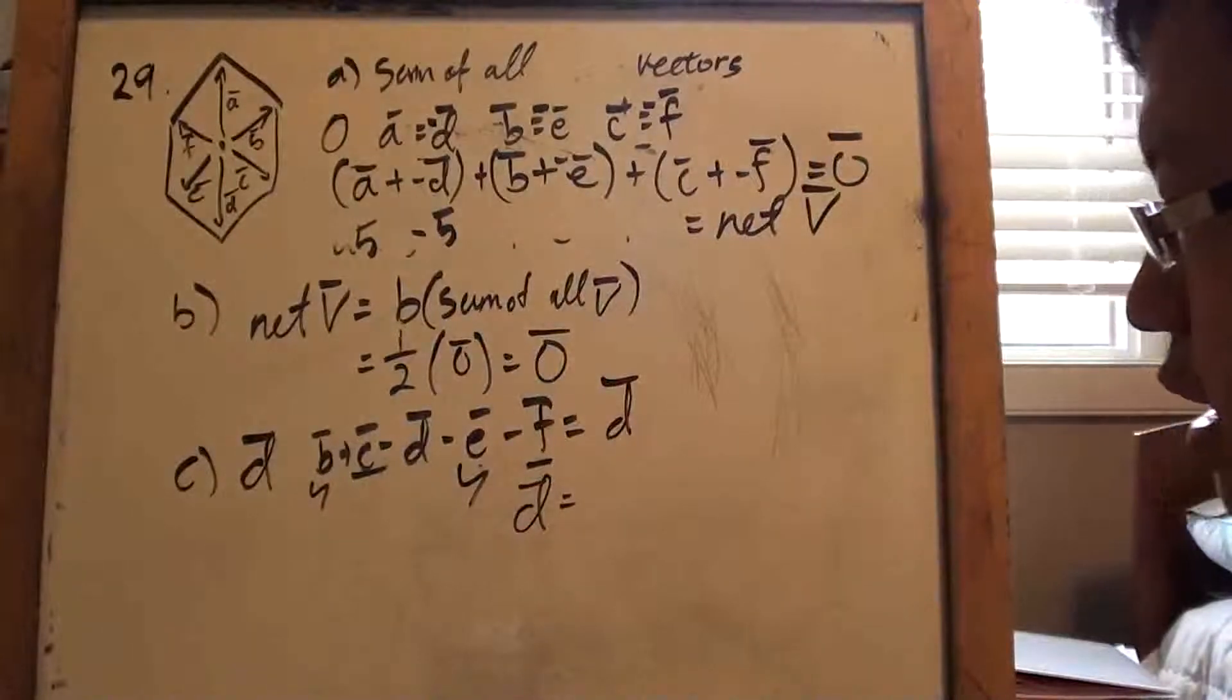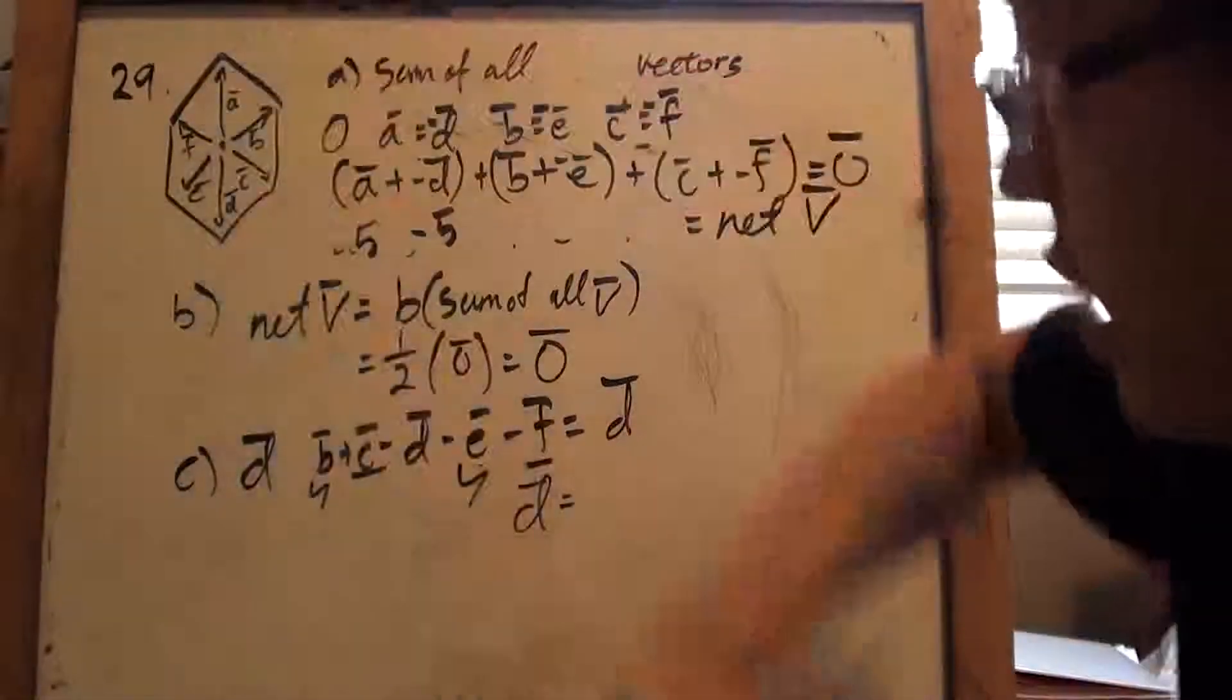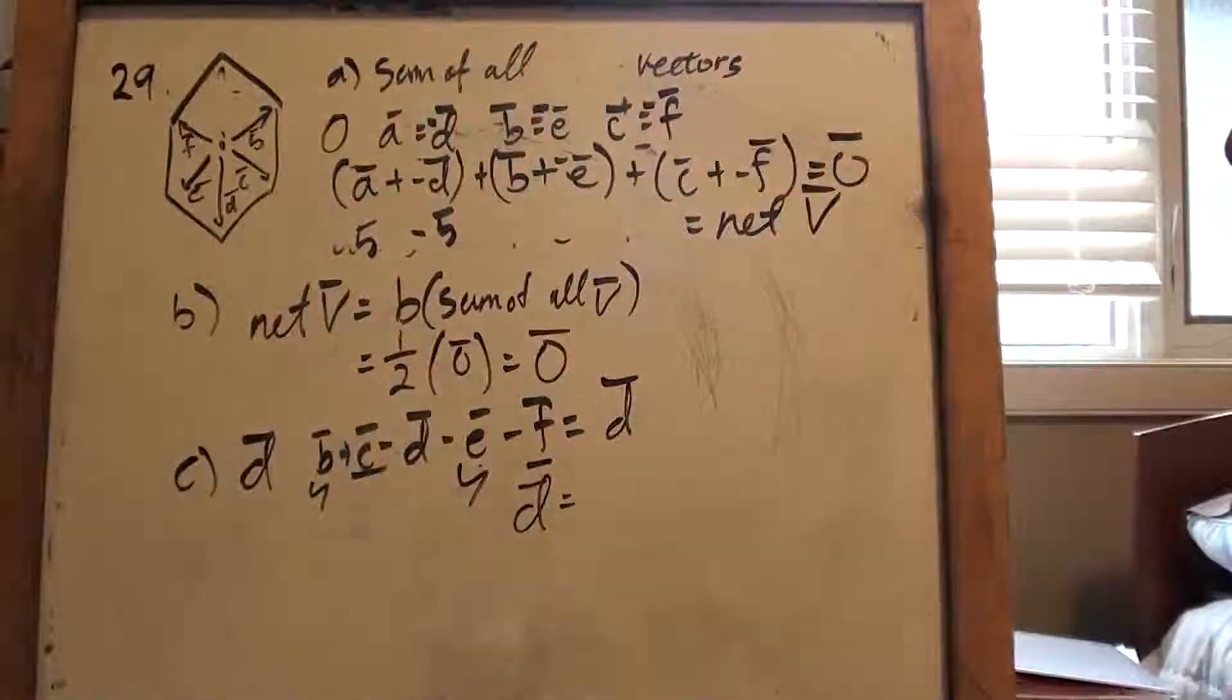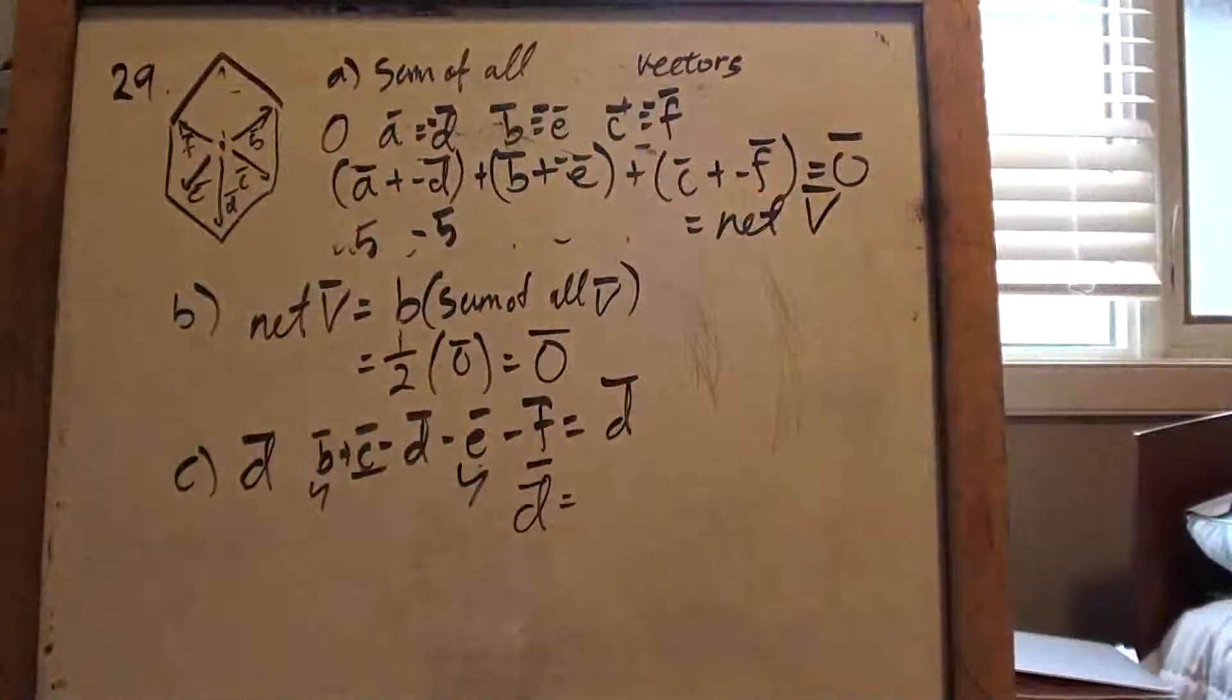So, same idea. C, you know, they're just asking what happens if we get rid of our A vector from the net vector, right? So, if we got rid of this, what would happen? Well, the F, B, and E, C will cancel out just the way it would, right?